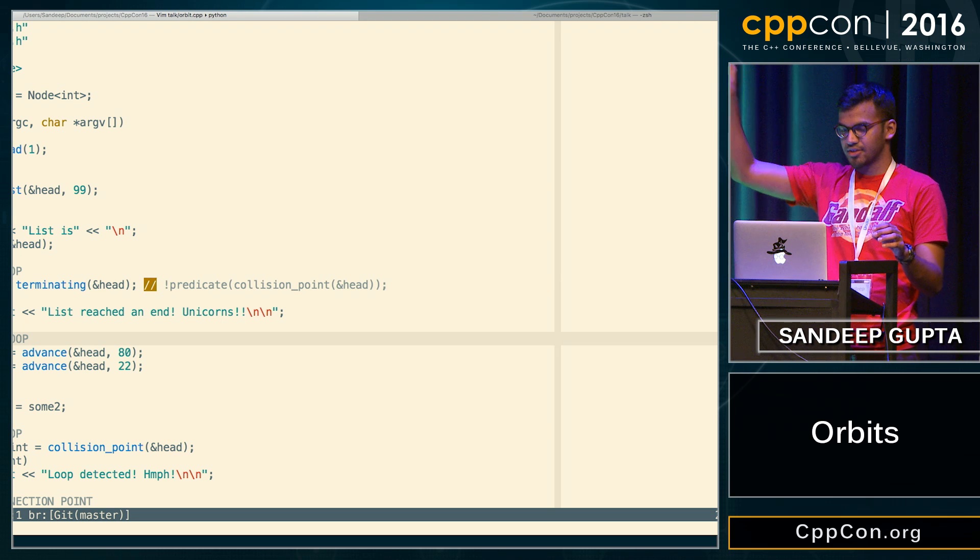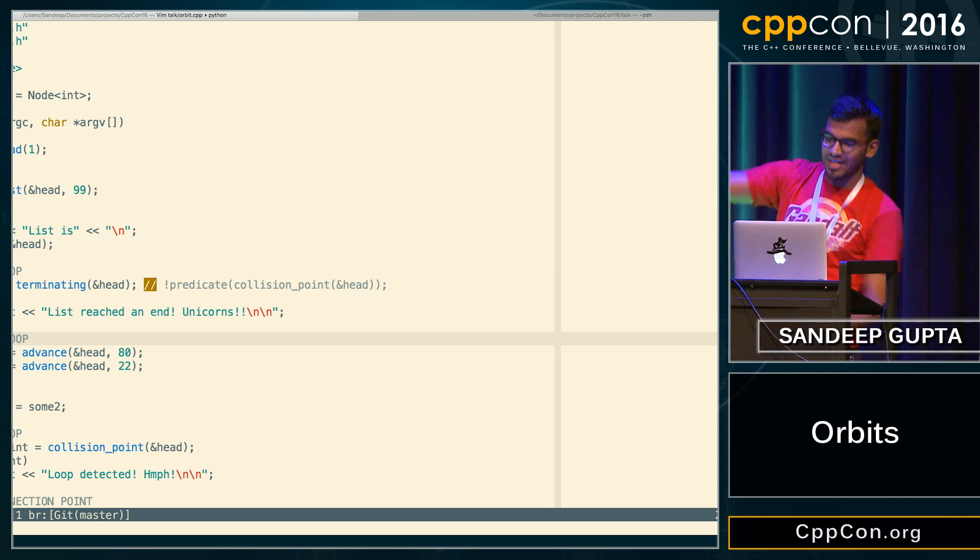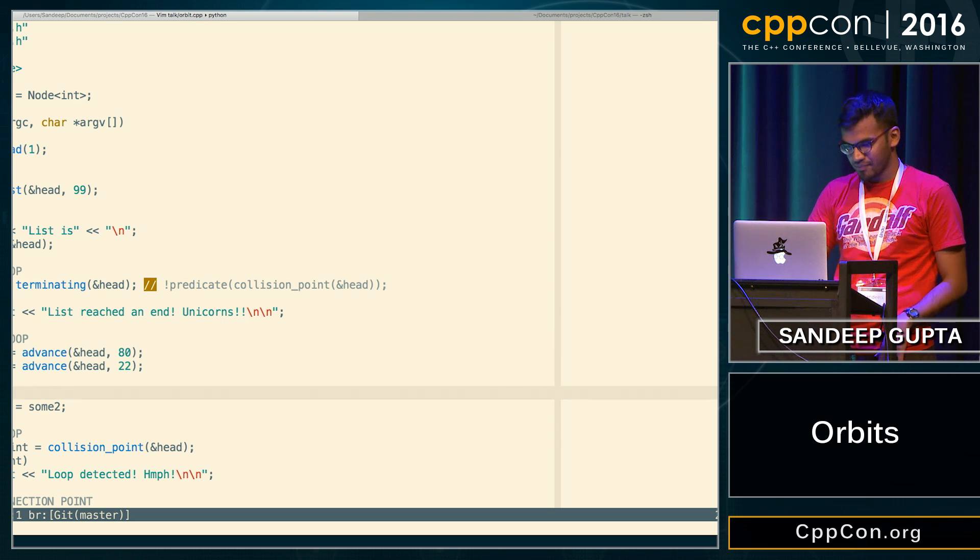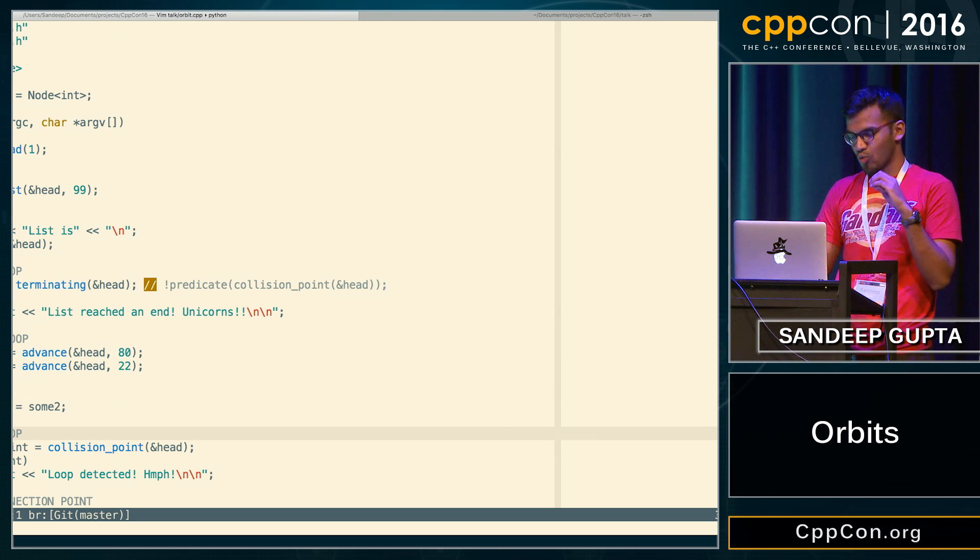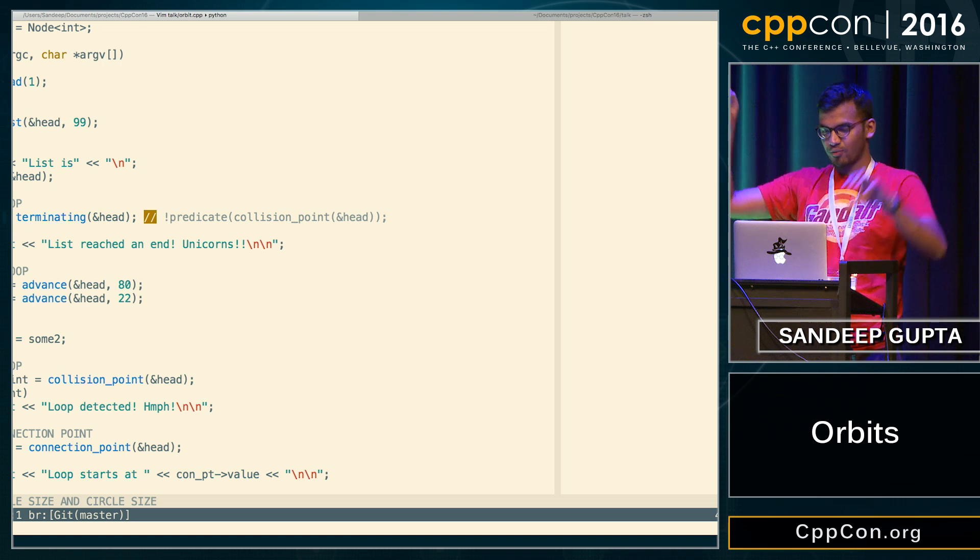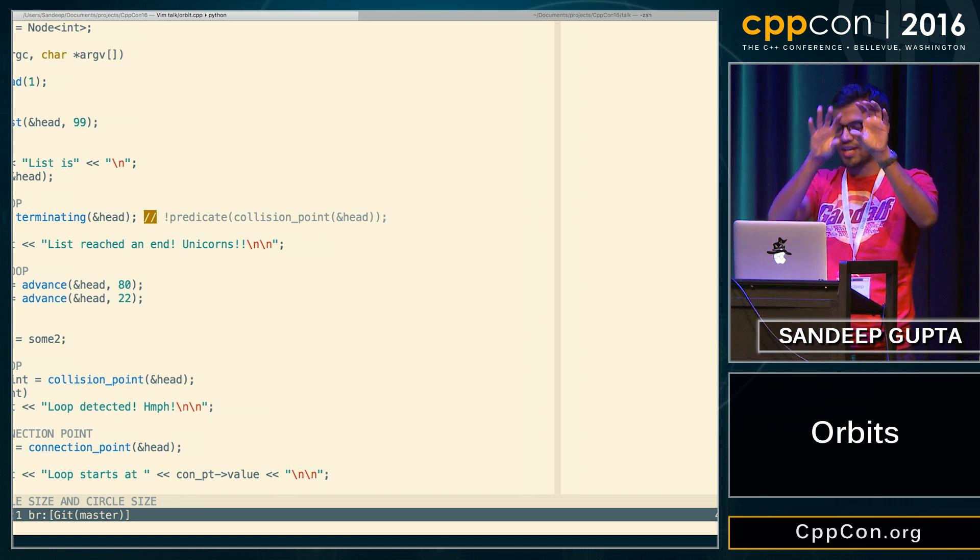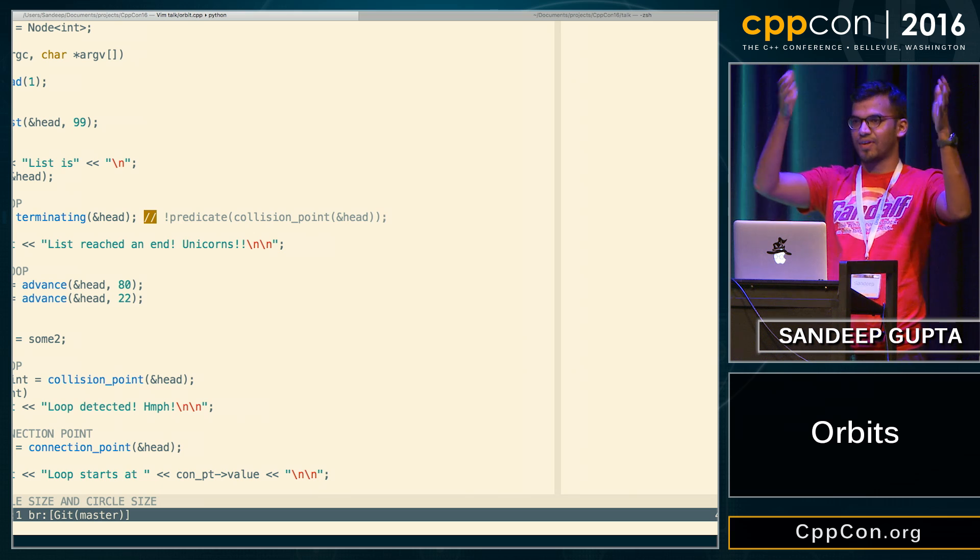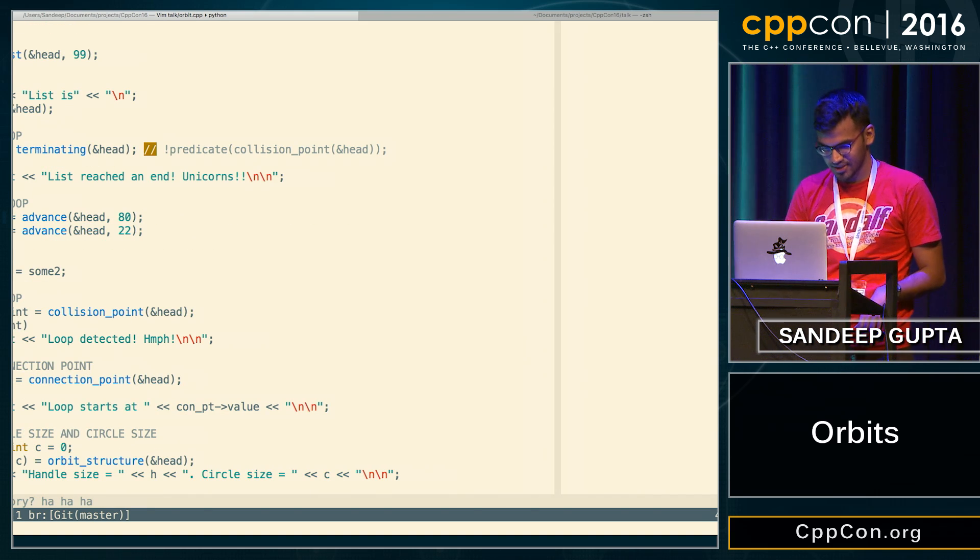So basically what I did was, I took the 80th node and then assigned that to the 22nd node. And then I'll check the loop again. And then once I find the collision point, then I'll try to find the connection point. Connection point was the point where the circle actually starts. And then, once I have that, then I'll try to find the handle size and I'll try to find the circle size.